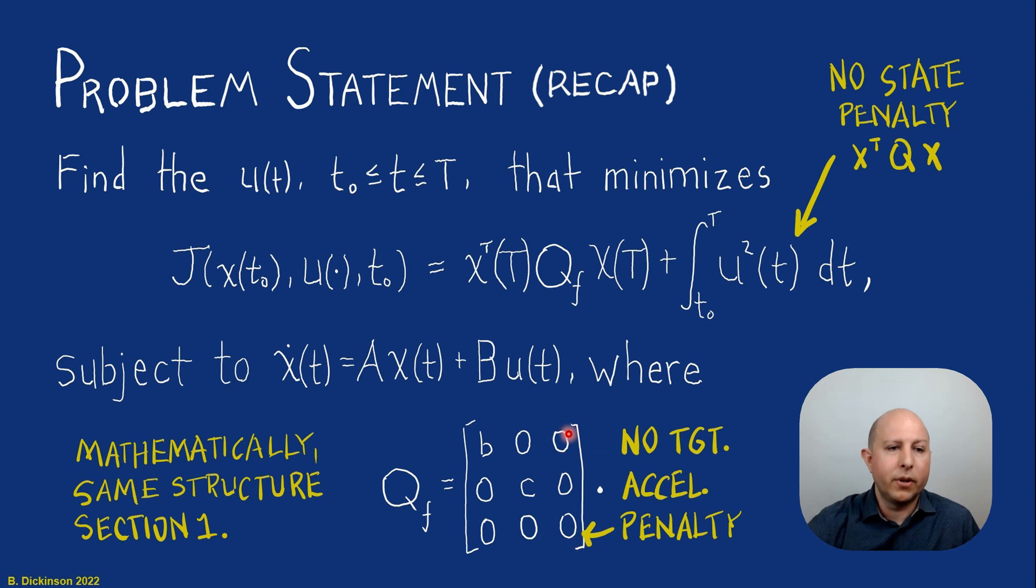And our problem statement was to find the control over the time interval that minimizes a quadratic cost function. There was a terminal cost, and then there was a control effort cost, and we did not have any quadratic state penalty. We're constrained by our kinematics that we just laid out, and this terminal penalty matrix has two positive values along the diagonal denoted by the variables b and c. And we did not have a penalty on target acceleration because we could not control target acceleration. So mathematically, this was the same structure that we had to solve in section 1. We just have different kinematics this time and a larger terminal cost matrix.